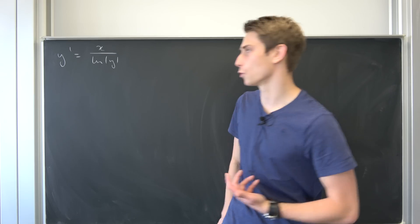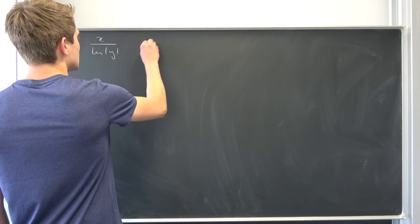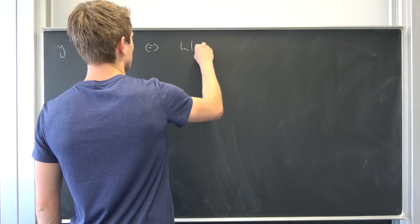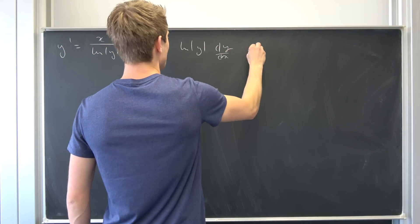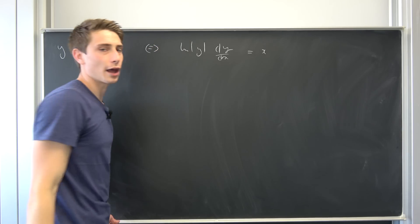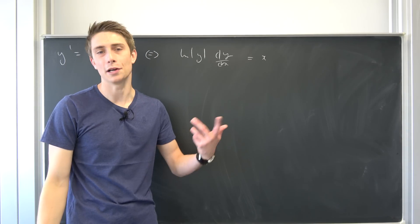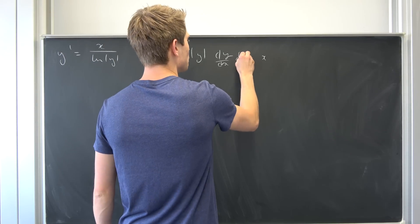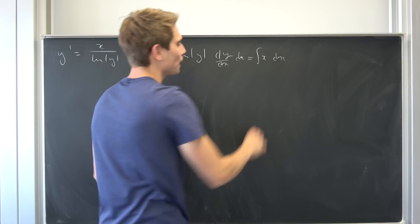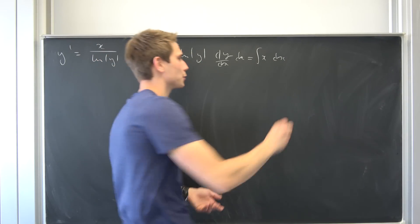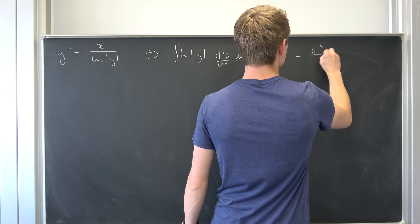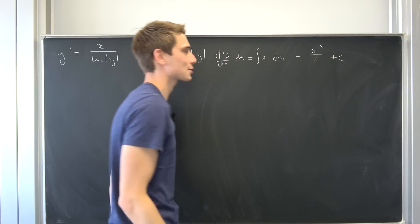So let's multiply both sides by the natural log of y. So we end up with the natural log of y times dy dx, let's put it that way, is equal to x. And how would you solve something like this? Well, easily integrate both sides with respect to x and then you should be done in the normal case. So this side is just going to evaluate to x squared over two plus some arbitrary constant c.